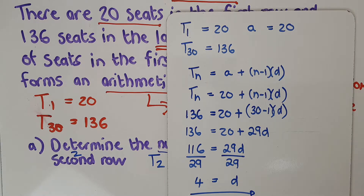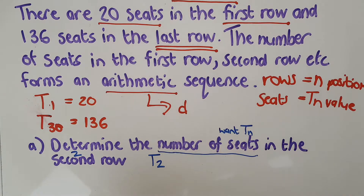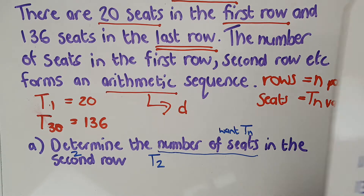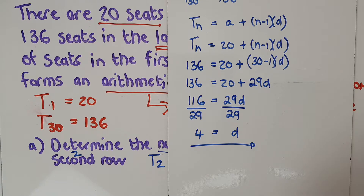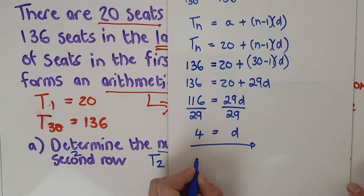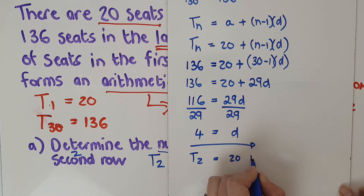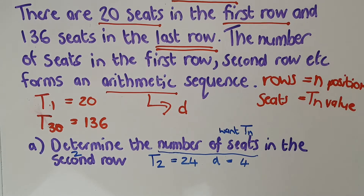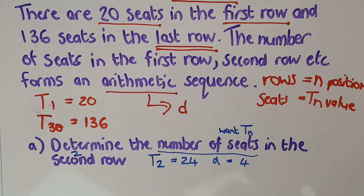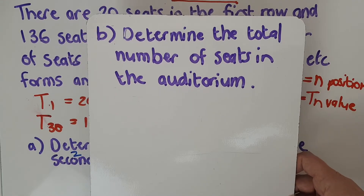I've got d equals 4. But what was the question? Determine the number of seats in the second row — so I need to find t2. I've got d, so I've got the whole formula. t2 is 20 plus (2 minus 1) times 4, which gives 24. Question answered: t2 is 24 and d is 4. I'm noting d because these questions often scaffold, and I may well use my previous answer in the next part.